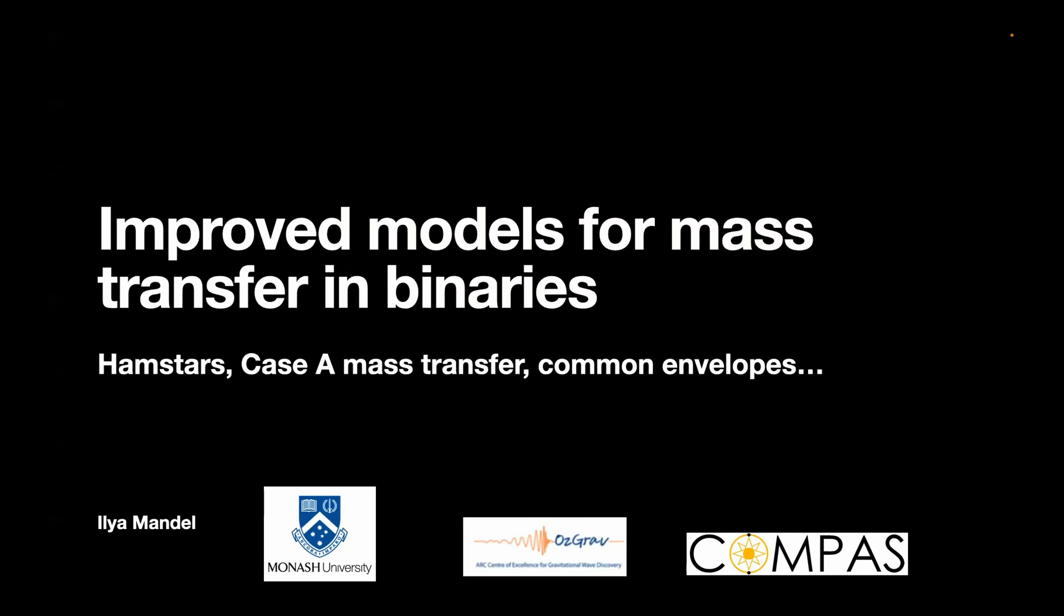Hi everybody. I'm going to try to tell you a little bit about some efforts that have been going on in our group about trying to model mass transfer binaries. When we talk about mass transfer binaries, there are multiple challenges involved. We want to know what happens to the accretor as a result of mass transfer, what happens to the donor as a consequence of mass transfer. Sometimes mass transfer becomes dynamically unstable, and we want to understand what happens in the context of dynamically unstable mass transfer, otherwise known as a common envelope phase. I'll try to mention briefly some of the ongoing progress on all of these fronts.